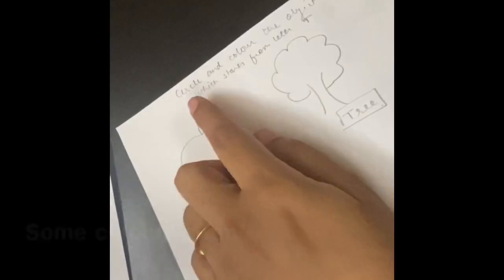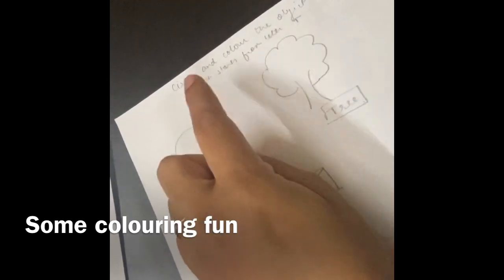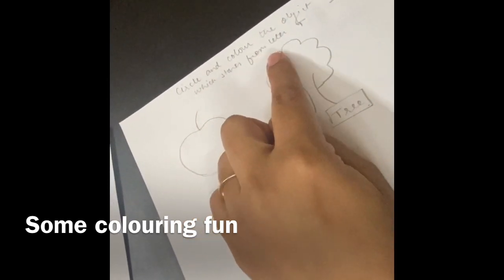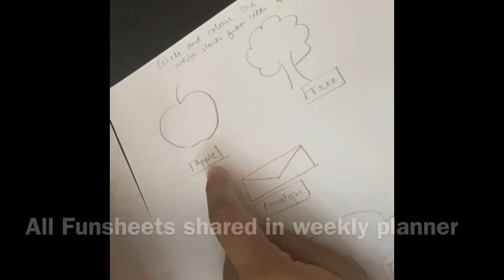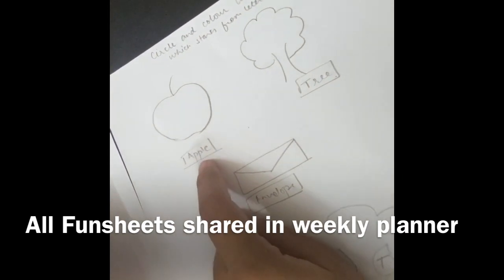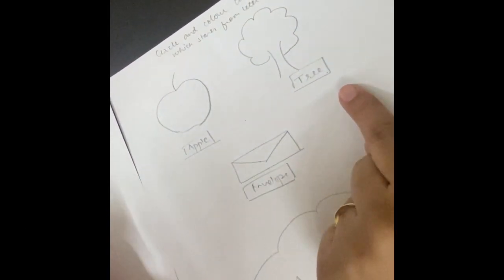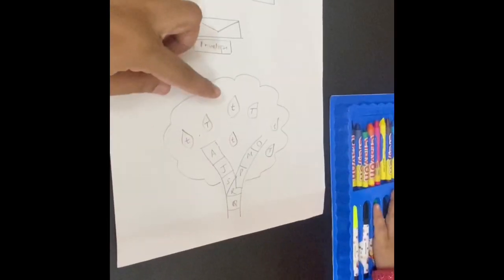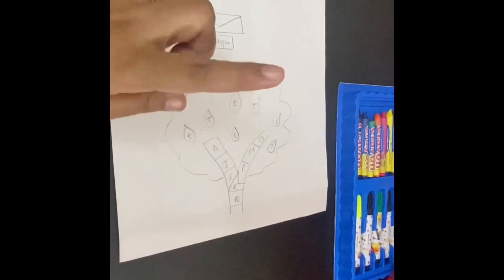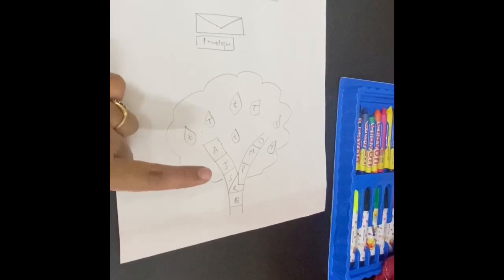3. Now circle and color the object which starts from the letter T. What is the sound of T? So which one starts from the letter T? You have to color with green, and all the rest you have to color with brown.